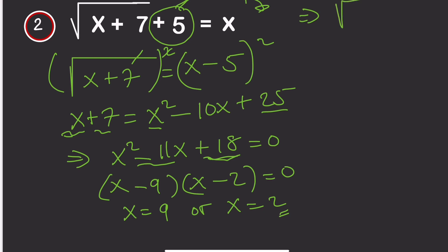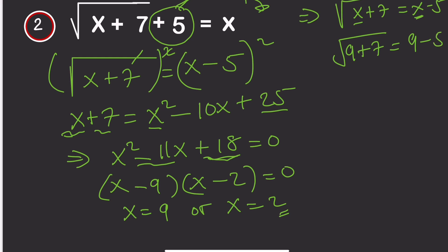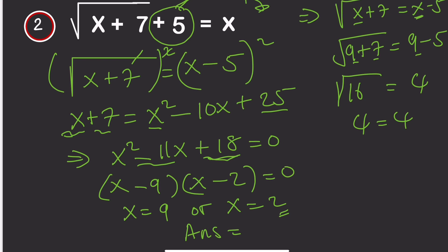Now let's check x equals 9. We have the square root of x plus 7 equals x minus 5. Substituting 9: 9 plus 7 gives 16, and 9 minus 5 gives 4. The square root of 16 is 4, so we have 4 on both sides. The correct answer for this question is x equals 9. Thanks for watching!